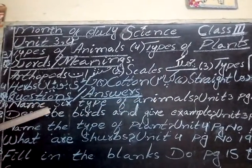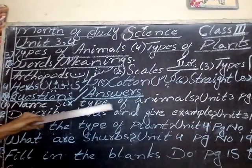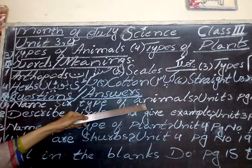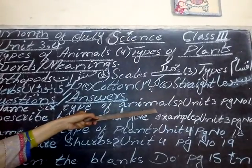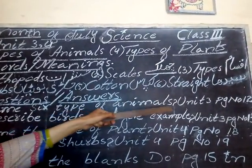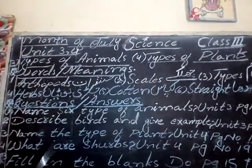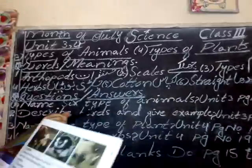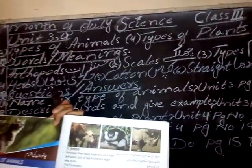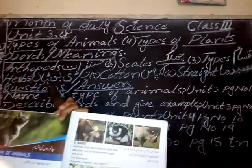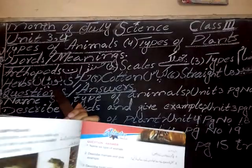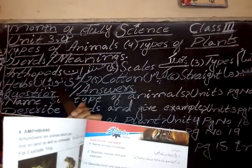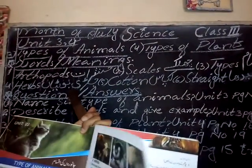Question number 2, question and answer: name 6 types of animals. Number three, page number 12. These are six types of animals: mammals, birds, fish, amphibians, arthropods, reptiles.